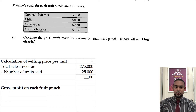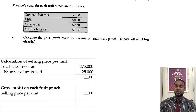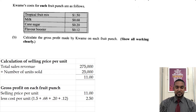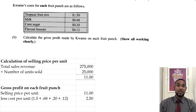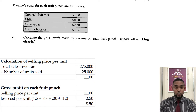So we're going to add up all of these figures and subtract from $11. Selling price per unit: $11. Less cost per unit: adding $1.50, 68 cents, 20 cents, and 12 cents gives $2.50. So $11.00 minus $2.50 equals $8.50. That's your gross profit per fruit punch.